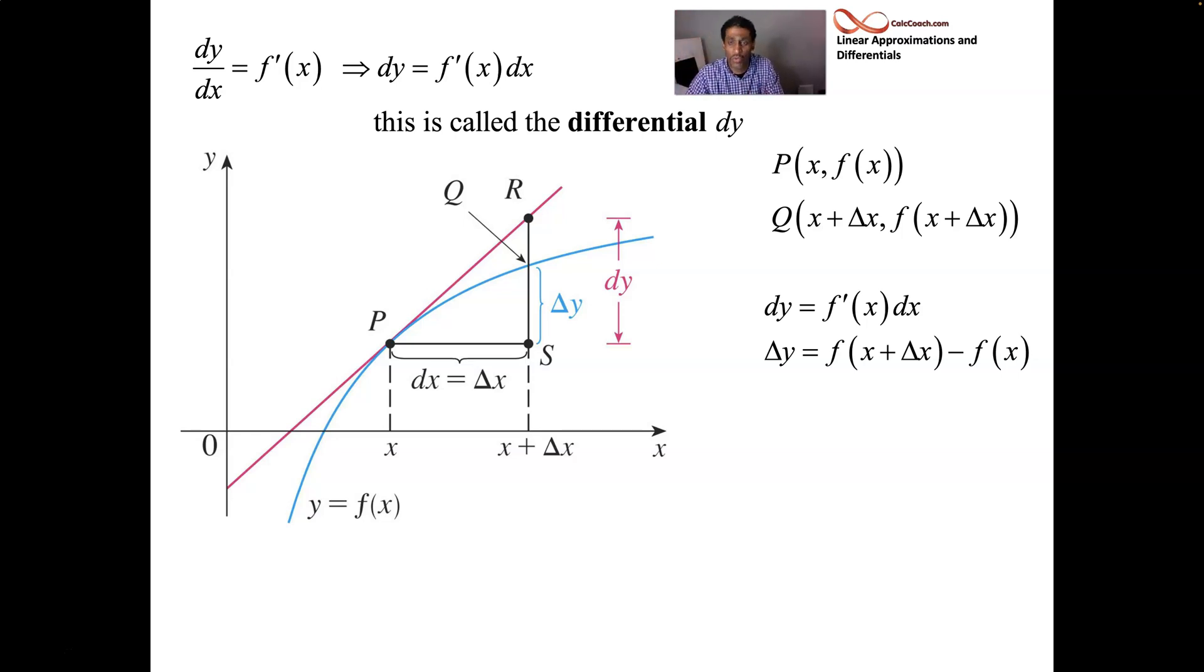Somebody asked you to find the actual change in the function, that's how you find it. Somebody asked you to approximate the change in the function, you'll use the differential. Take the derivative, evaluate it at x, and multiply it by dx. These are all small, infinitesimal, small changes in x. And the smaller that the change in x gets, then that gap between your tangent line and your curve, the difference between dy and delta y will get smaller and smaller.